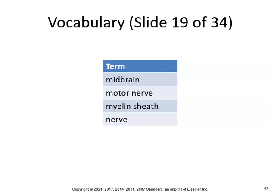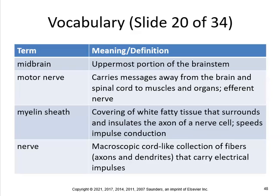The midbrain, motor nerve, myelin sheath, and the nerve. The midbrain is the uppermost portion of the brainstem. The motor nerve carries messages away from the brain and spinal cord to muscles and organs — that's the efferent nerve. Myelin sheath is the covering of white fatty tissue that surrounds and insulates the axon of a nerve cell; it speeds the impulse — think of insulation on a wire. A nerve is macroscopic, a cord-like collection of fibers — axons and dendrites — that carry electrical impulses.